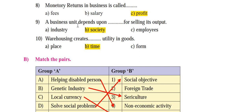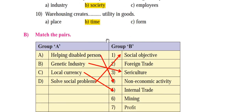Ninth: 'Business unit depends upon ___ for selling its output.' A business unit depends on society to sell its goods and output. The correct answer is B — society. Tenth: 'Warehousing creates ___ utility in goods.' Warehousing creates time utility — goods are stored and introduced into the market depending on demand and supply. The correct answer is B — time utility.